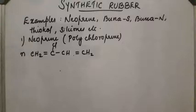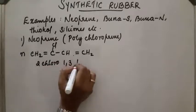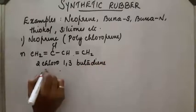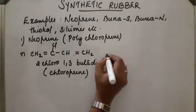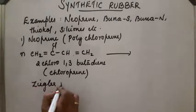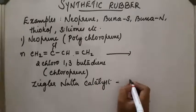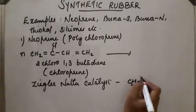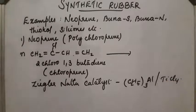This is 2-chloro-1,3-butadiene is chloroprene. So chloroprene polymerizes in the presence of Ziegler-Natta catalyst. Ziegler-Natta catalyst is trimethyl aluminum or titanium tetrachloride. The same reagent we used for the preparation of high density polyethylene. We already discussed that. Same catalyst we are using here.